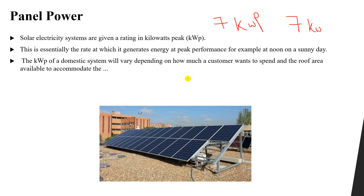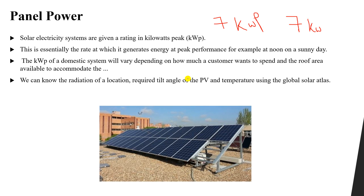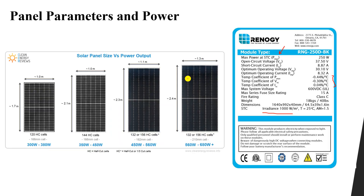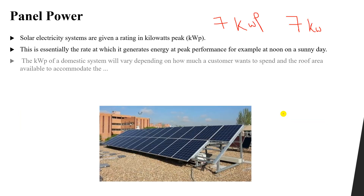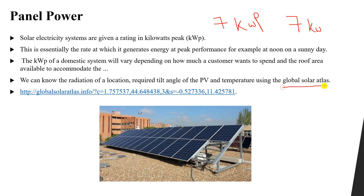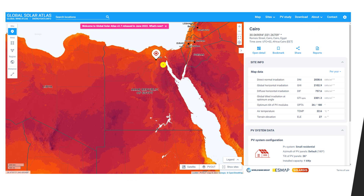We can find the radiation of a location, the required tilt angle of the PV, and temperature using the Global Solar Atlas. As mentioned, irradiance and temperature are very important to know. Using the Global Solar Atlas website, if you select your location you can find the optimum tilt angle, irradiance values, and temperature. For example, if I select Cairo, Egypt — the same location as the previous lesson.